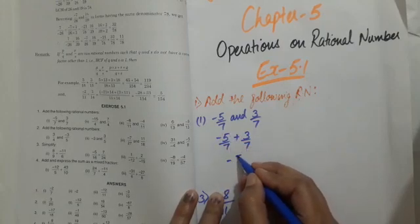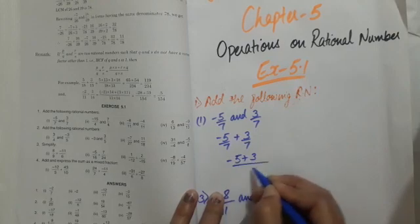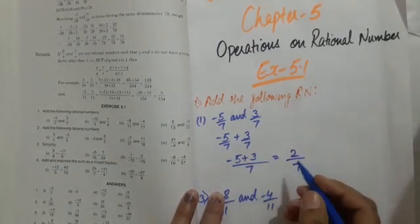The operation is plus, so we have to add the numerators. But this one numerator is negative, so you will take -5 plus 3 over 7.